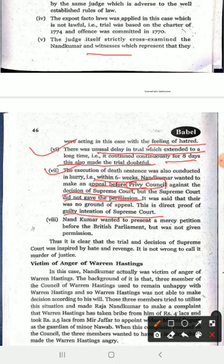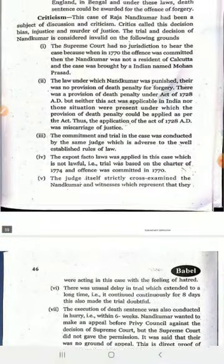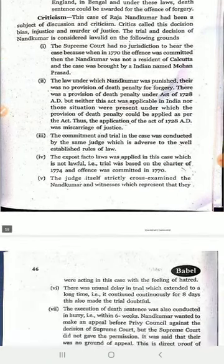It was said that there was no ground of appeal — this is direct proof of the malafide intention of the Supreme Court. The British Parliament had a mercy petition available, but it was not allowed to be used. It is thus clear that Nand Kumar became a victim of the anger of Warren Hastings, and that Impey, Warren Hastings's close friend, breached the law and tried to block every provision — no appeal, no mercy petition, and no principle of natural justice was followed.